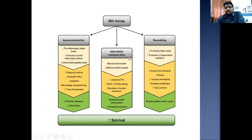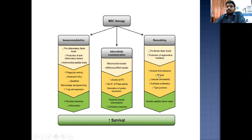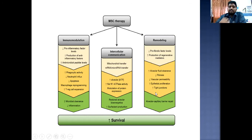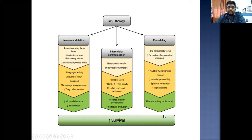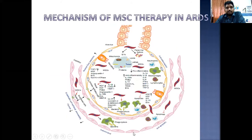Regarding remodeling, MSC therapy reduces pro-fibrotic factor levels, increases protective regenerative mediators, increases alveolar fluid clearance, decreases fibrosis, decreases vascular permeability, increases cellular proliferation, and improves tight junctions — preventing leaky alveoli and accumulation of fluid and inflammatory exudate. This prevents further alveolar injury, improves gas exchange, and helps in alveolar-capillary barrier repair, ultimately improving survival in ARDS patients.